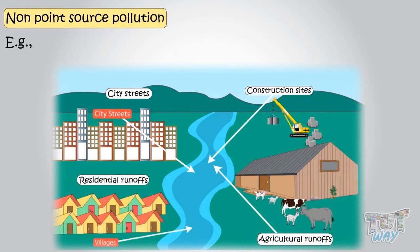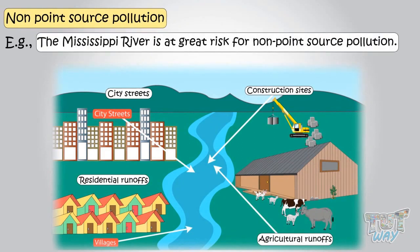Example, the Mississippi River is at great risk for non-point source pollution because it is so large and it is exposed to a variety of pollution sources.